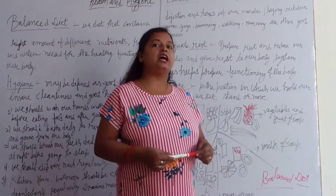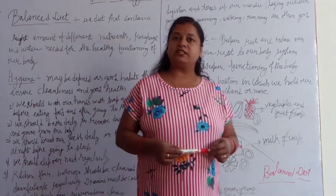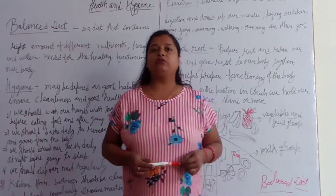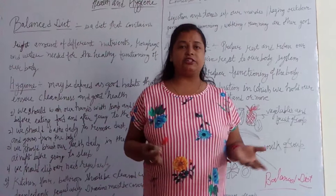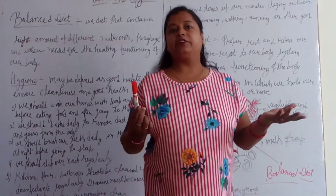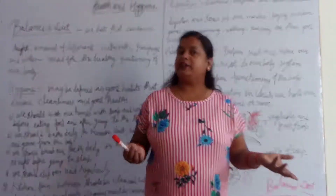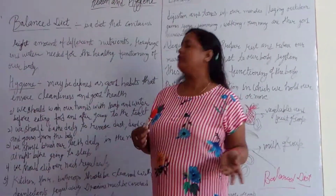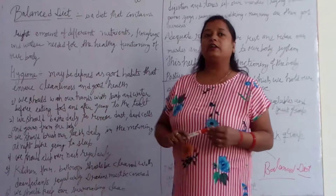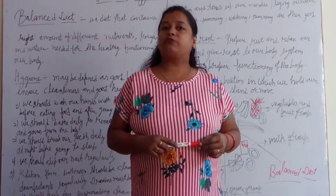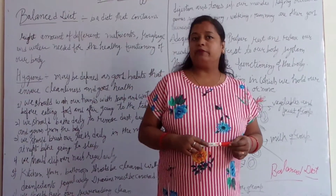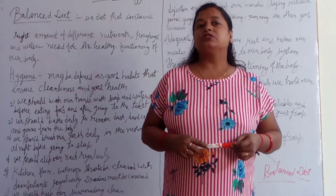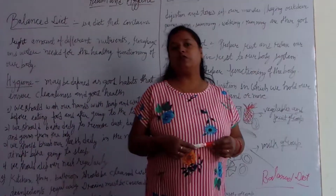In the previous class, I explained that food is necessary for our normal growth and functioning of our body. Without food, we don't get energy and can't do any kind of work — reading, writing, doing exercise. That's why we need nutritious food. The required nutrients include proteins, carbohydrates, fats, vitamins, minerals, roughage, and water, so we can do normal functioning of our body.